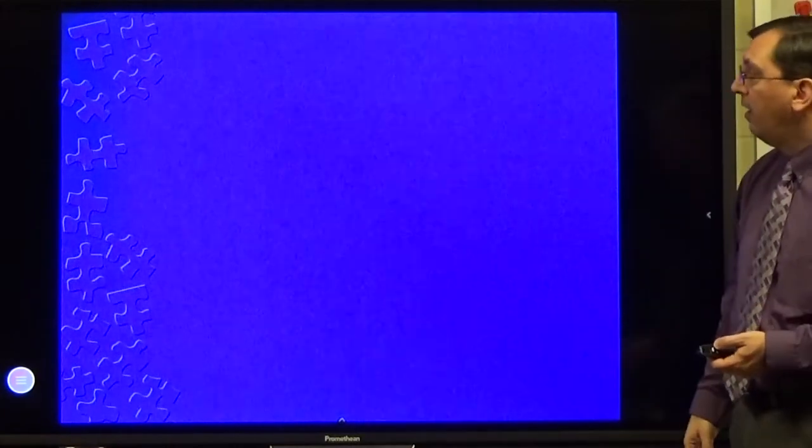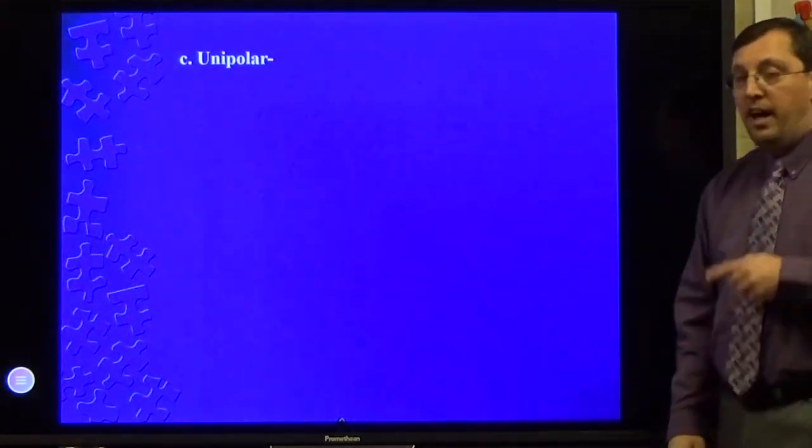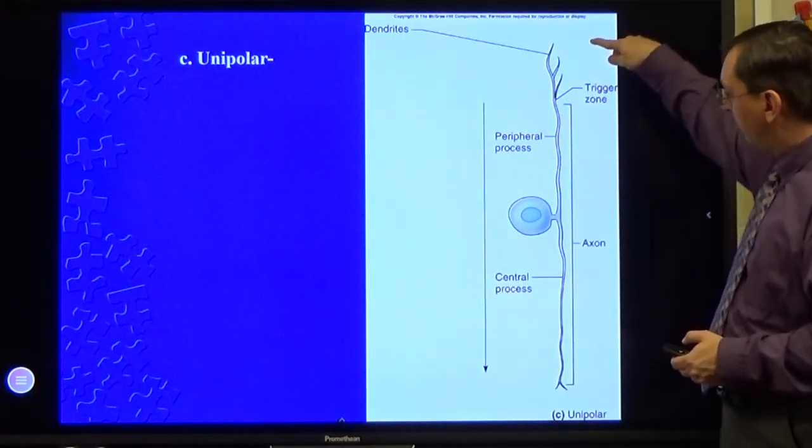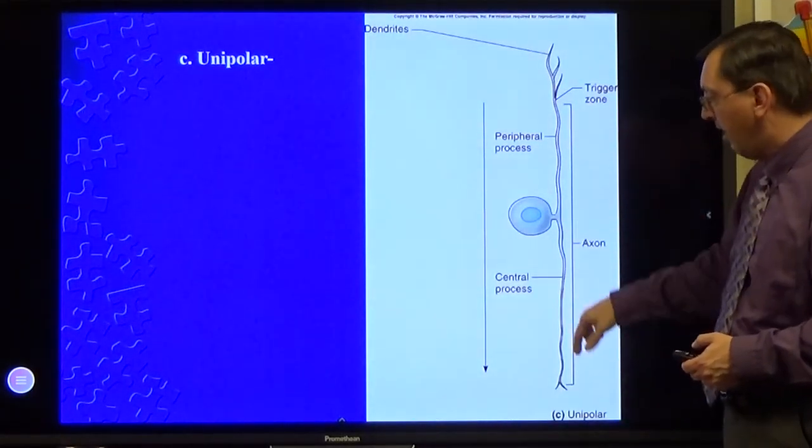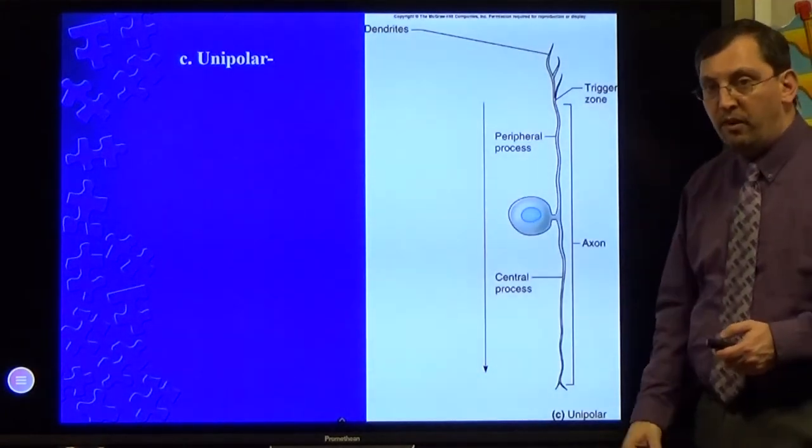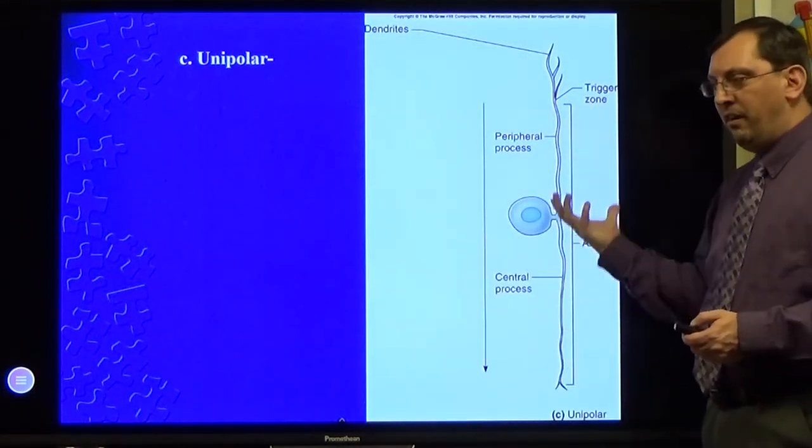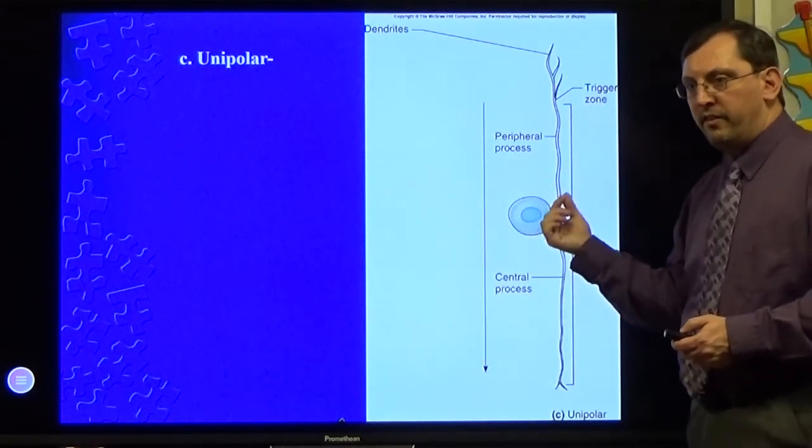And then unipolar has just one branching fiber with the cell body off the side. So the dendrite really goes straight into the axon and doesn't even go through the cell body which sits off to the side. Obviously fairly quick, but it does lose a little bit of its ability to process things this way.